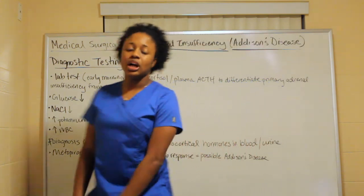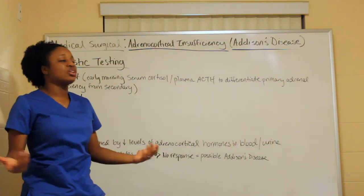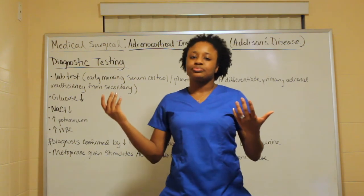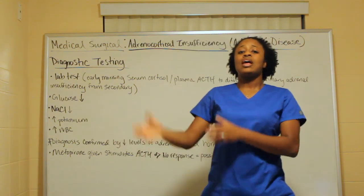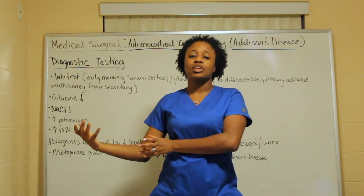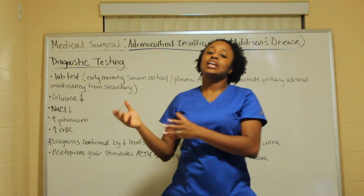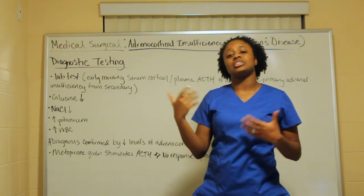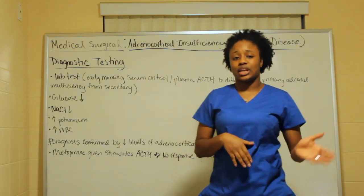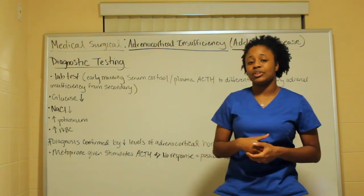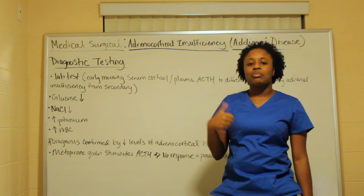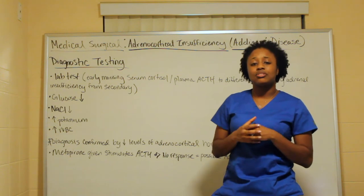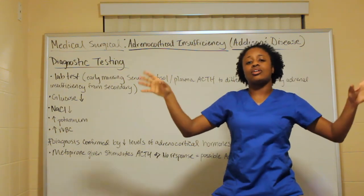For diagnostic testing, the main tool is lab test results. Early morning serum cortisol or plasma ACTH is used to differentiate primary adrenal from secondary adrenal insufficiency. Secondary adrenal insufficiency is when the pituitary gland isn't functioning, so because the primary problem is pituitary dysfunction, the adrenal glands can't produce ACTH, leading to a secondary problem.